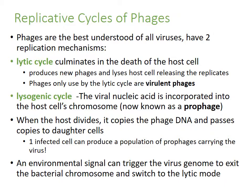Phages are the best understood of all viruses, and they have two main replication mechanisms. One reason phages are so well understood is because it's easy to grow bacteria in a lab. The lytic cycle ultimately results in the death of the host cell — it produces new phages, then lyses the host cell and releases the viral replicates. Phages that only use the lytic cycle are called virulent phages.